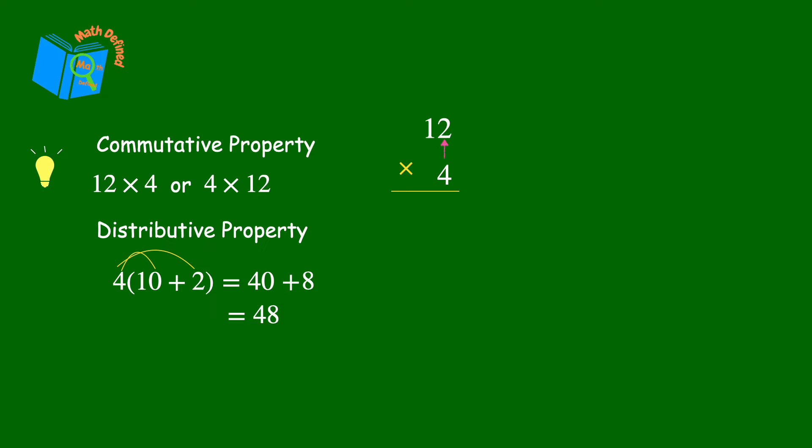First I multiply 4 times 2 to get 8 and then 4 times 1 to get 4 and the product is 48. Now that was probably very easy and familiar to you. Next I'll use the commutative property to change the order and I'll multiply 4 times 12 in this same vertical format.